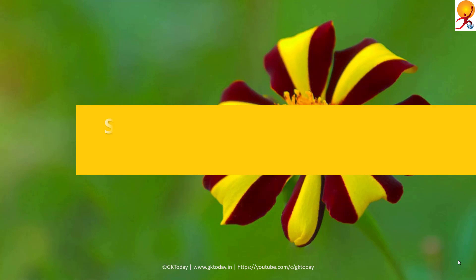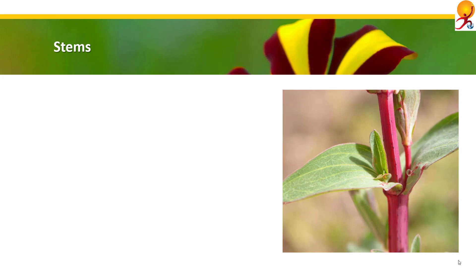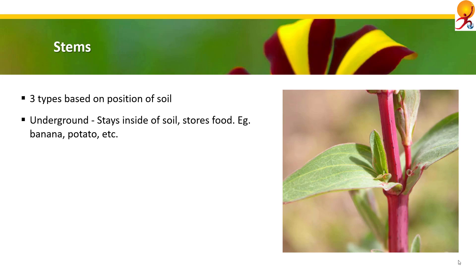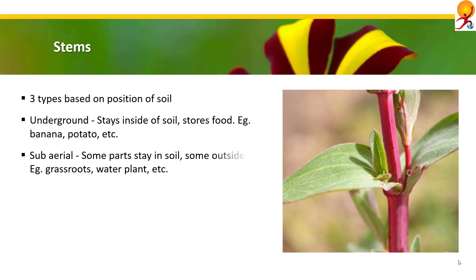Now we come to stems. On the basis of position relative to the soil, stems are of three types. Underground stem: the branch or part of the stem which is inside the soil is called an underground stem. These stems store food; nodes, internodes, buds, and scale leaves are usually found on them — example banana, potato. Subarial stems: if part of the stem is inside the soil and the rest is in air, these are called subarial stems — example grassroot, water plant.